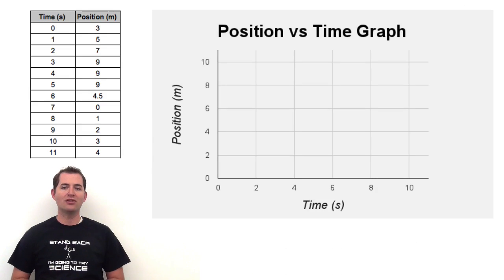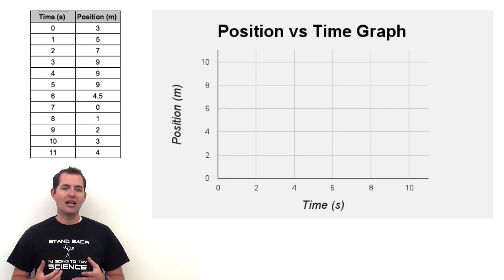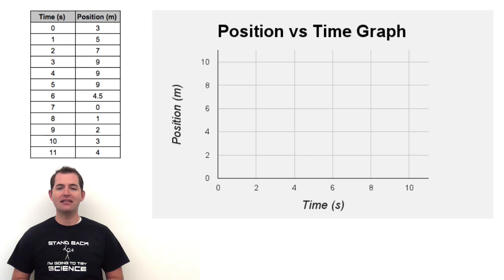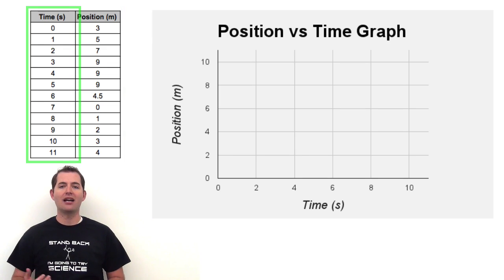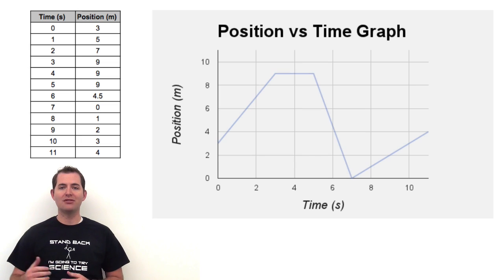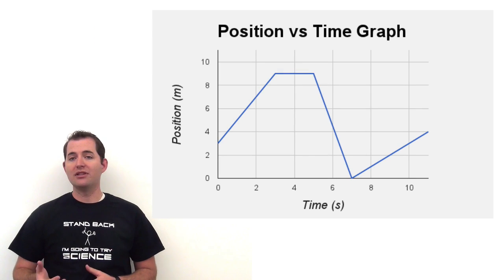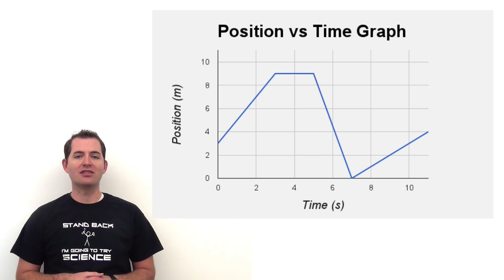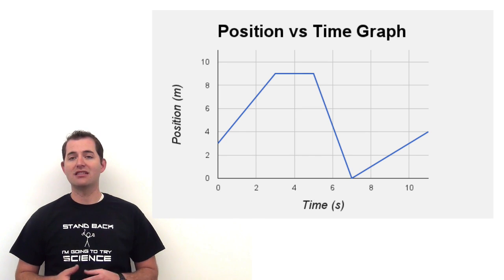Let's start by putting some data or some graphing on this position versus time graph. We can do this with a simple set of data — in this case we've got some positions, and we've got some times associated with those positions. We're going to transpose those onto our graph. Now we have this example of a position versus time graph, and we can see that there are some variations in what's happening.